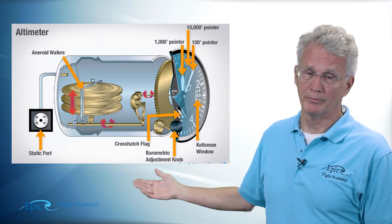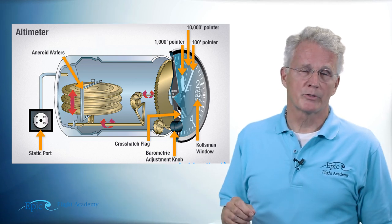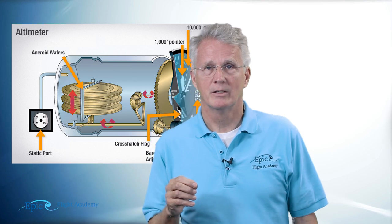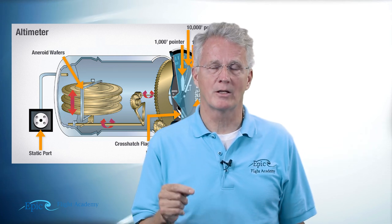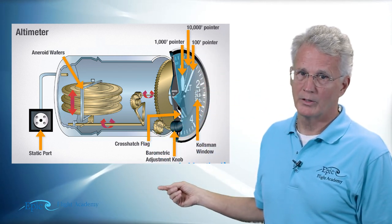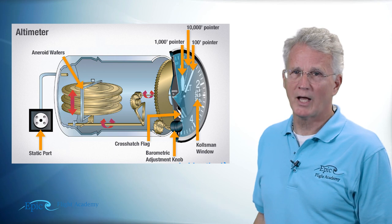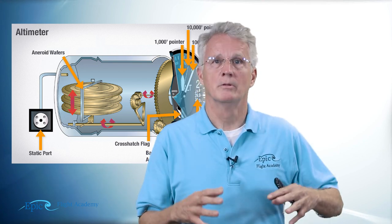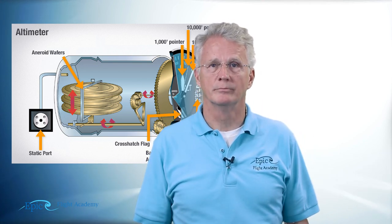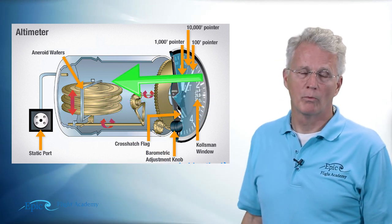Here's a cutaway of the altimeter. I'd like you to notice something very specifically. We had talked previously about the static system, and the static system supplies static air to this altimeter case — you can see that right here, it's coming in the back of the case. The inside of your altimeter is at the same static air pressure as the altitude that the airplane is flying.